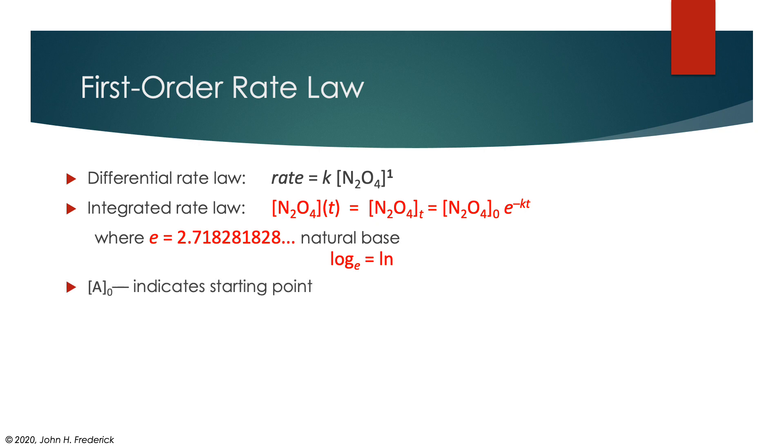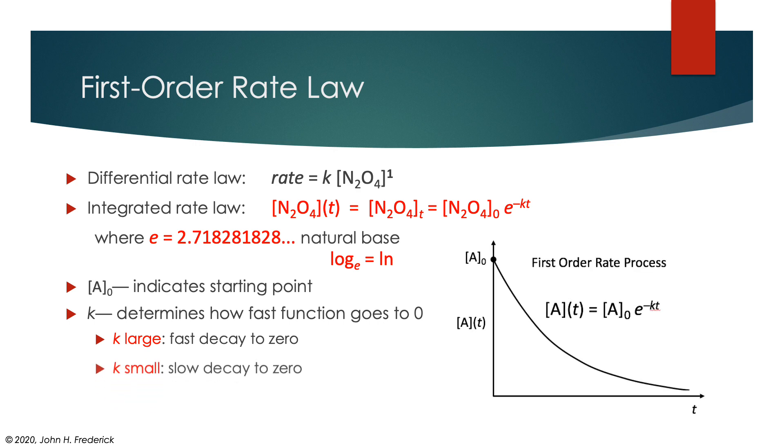A₀ is the starting point for our calculation. k determines how fast the function is going to disappear to zero. If k is large, there's going to be a rapid decay to zero. If k is small, we're going to have a slow decay to zero.